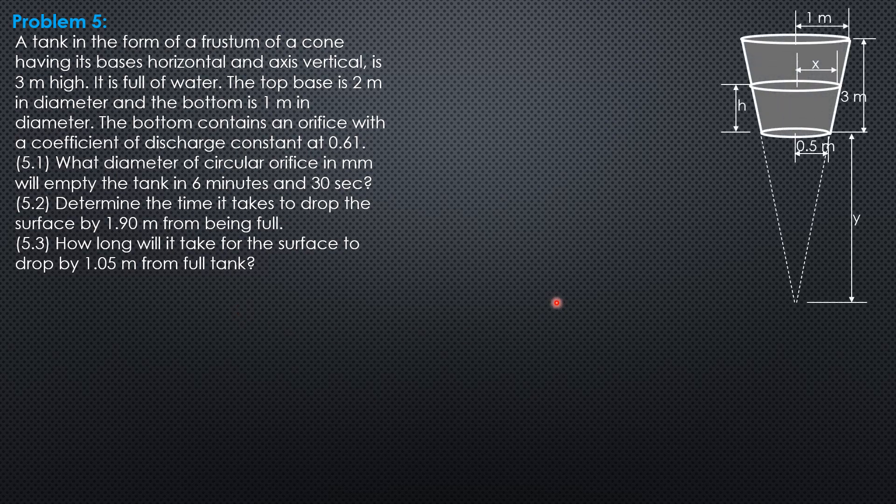So let's know the figure so that we can analyze it well. Because area S is changing with the head, the formula is time equals integral of area S dH over C a sqrt(2gH). Where we have to solve for Y by this extension, Y as to 0.5 equals Y plus 3 as to 1. So Y is 3 meters also.